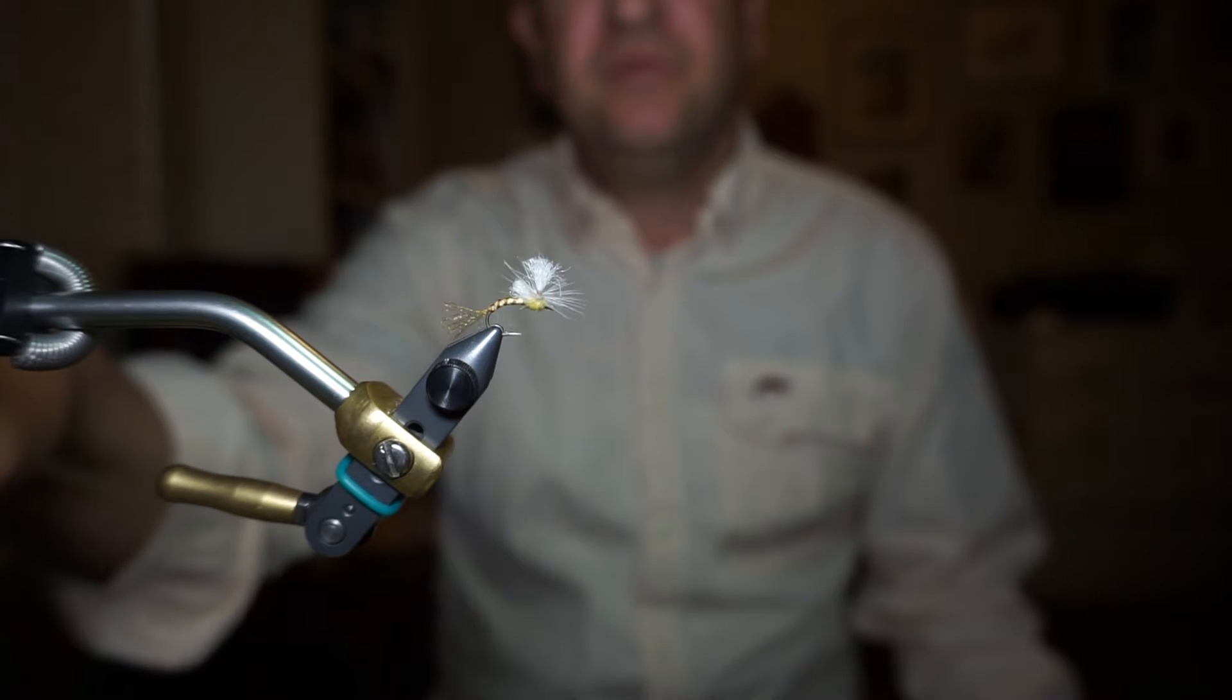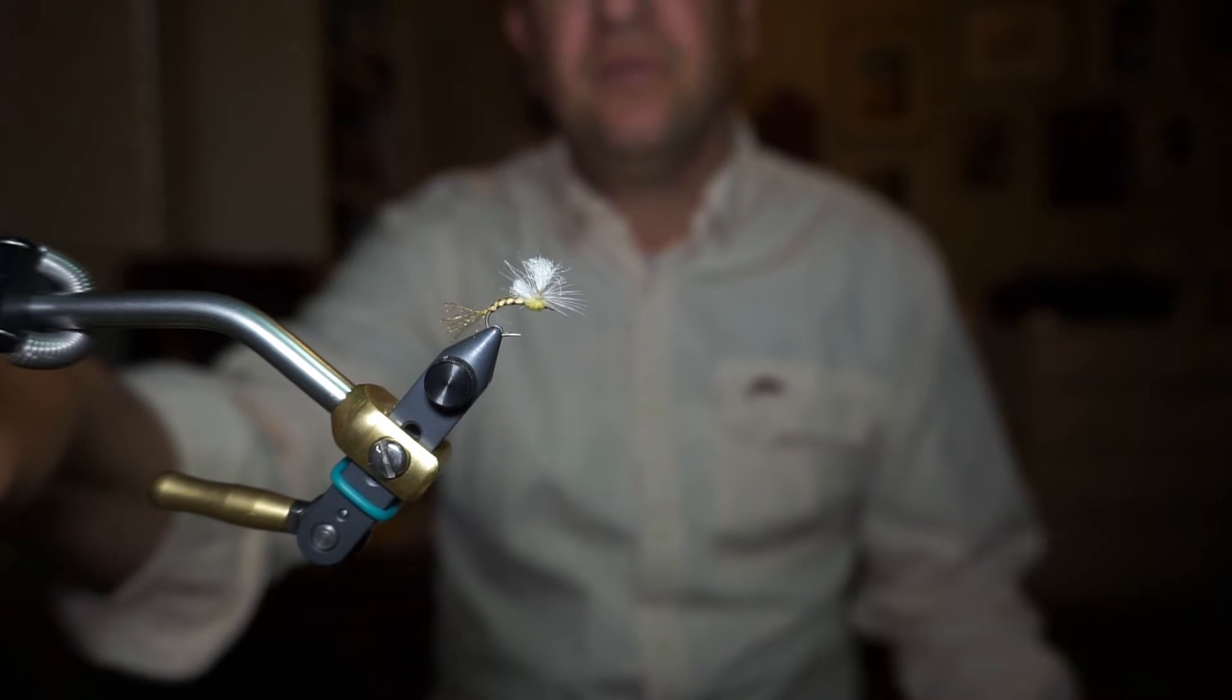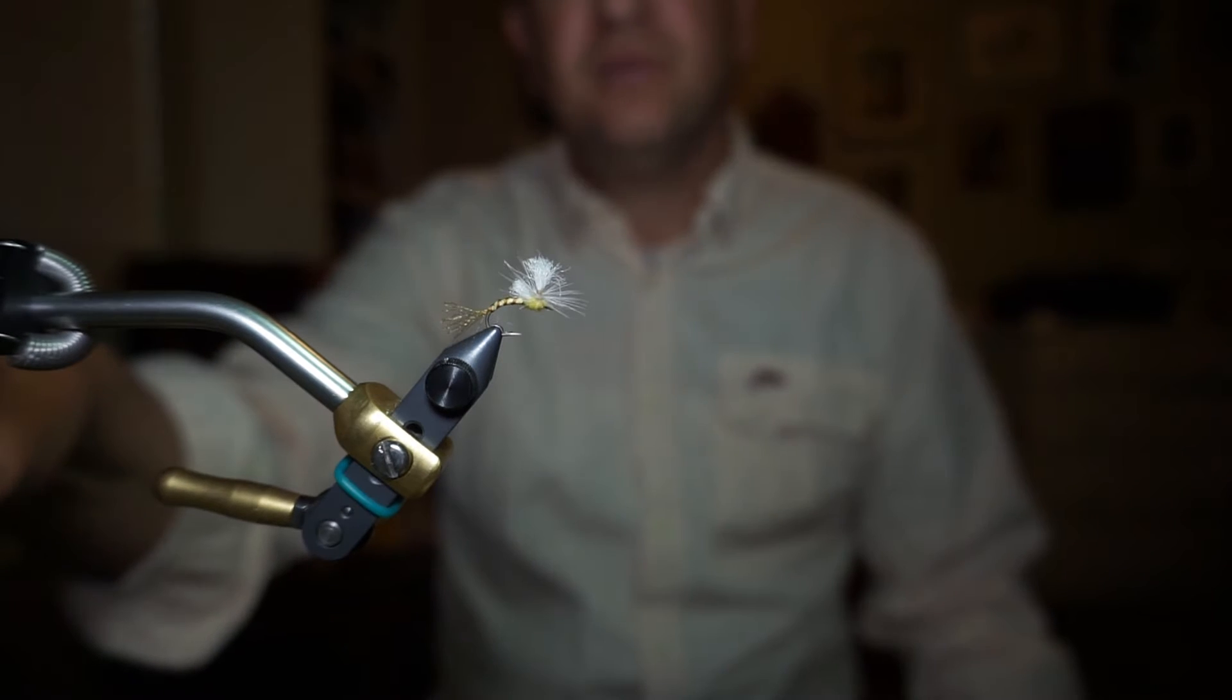It's a fly I like to drop PMD nymphs or pheasant tails off the back of it and fish dry dropper with this one. I like it because it floats well, and you can put a lot of floatant on it to keep it floating for an indicator as well as a dry fly.